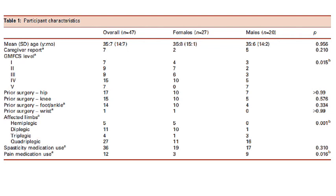Of the 47 participants that were recruited, seven individuals required caregiver report for these questionnaires. These patients were fairly spread out between the GMFCS levels, and significantly more patients were quadriplegic compared to hemiplegic, diplegic, or triplegic. Thirty-six of these patients were currently using spasticity medications. Of these, three had an intrathecal baclofen pump, 21 were on oral baclofen, and nine were on multiple medications. Twelve of the patients were using pain medication, which could include NSAIDs, gabapentin, or SNRIs. None of these patients were on opioids at the time. Twenty-three of the patients had had prior musculoskeletal surgery on either the hips, knees, feet, or wrists, and only one individual was known to have had a selective dorsal rhizotomy.